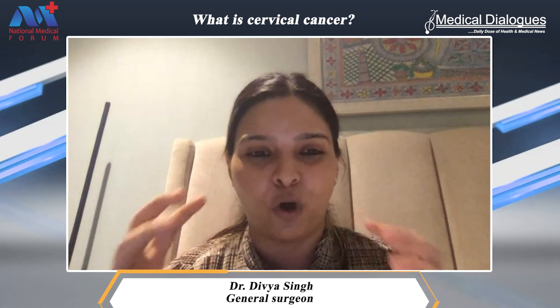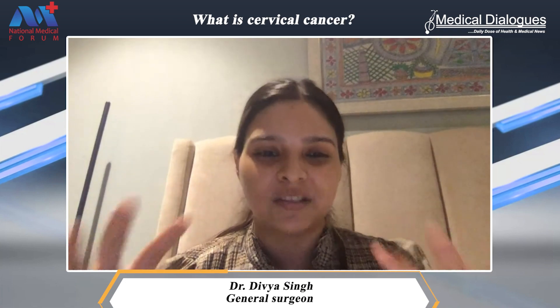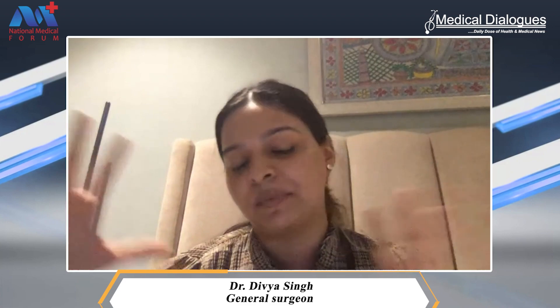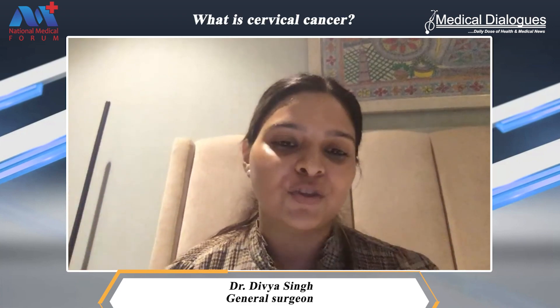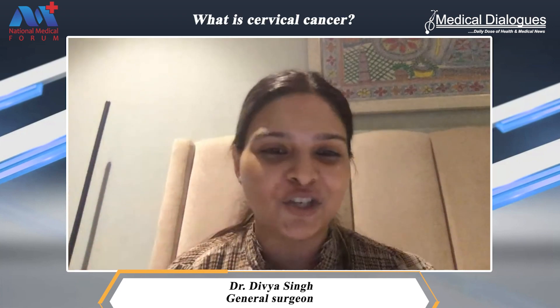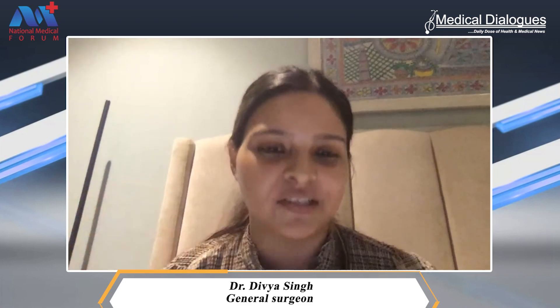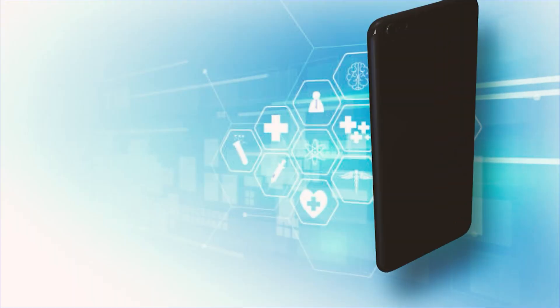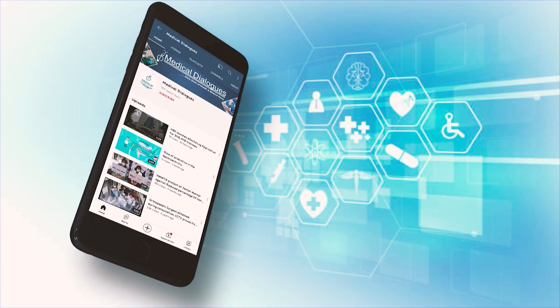At an advanced stage, the cancer is in the form of a tumor and has spread to places around the uterus, the lymph nodes, and sometimes even the surrounding structures within the pelvis. That, in a nutshell, is what cervical cancer means in layman's terms.